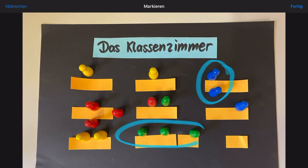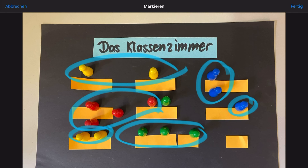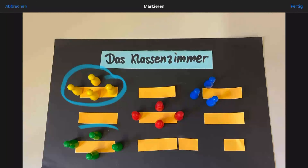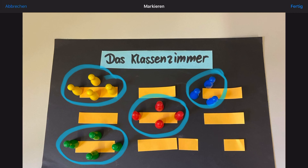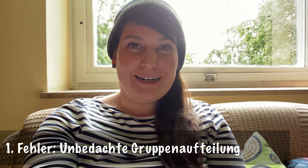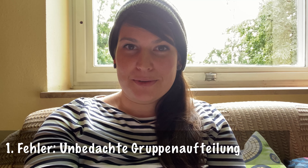Das habe ich alles falsch gemacht. Zum einen habe ich die Gruppen spontan eingeteilt – Zweiergruppen, Dreiergruppen, Vierergruppen. Im Nachhinein denke ich: warum? Das hat viel damit zu tun, dass die Stunde in der vierten Stunde war. Es wäre sinnvoll gewesen, Vierergruppen oder höchstens Dreiergruppen zu bilden, wo ich als vierte Person einspringen kann oder wo ein freier Platz zum Wechseln ist. Ich habe also spontan eingeteilt und so Zweier-, Dreier- und Vierergruppen erhalten.